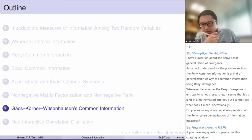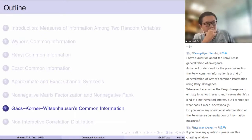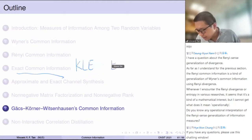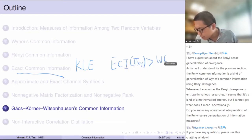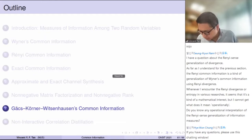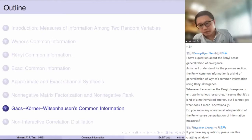Just now in the second part, we resolved one open problem by Kumali and El Gamal, and we saw that exact common information for some source — in particular the DSBS — can be larger than Wyner's common information for the same source. So this resolves one conjecture. Now we are going to discuss two other conjectures that are now theorems.